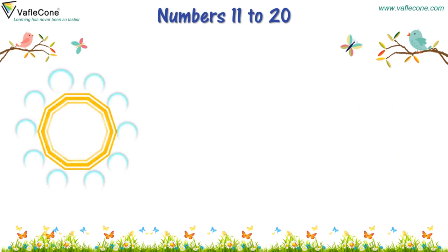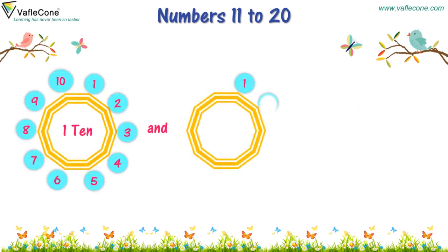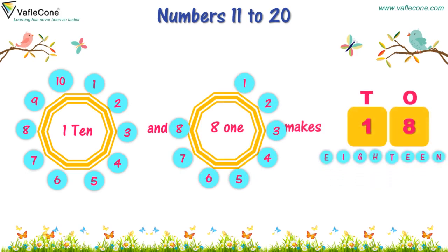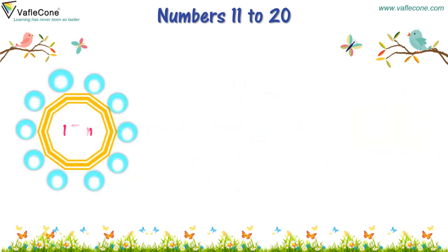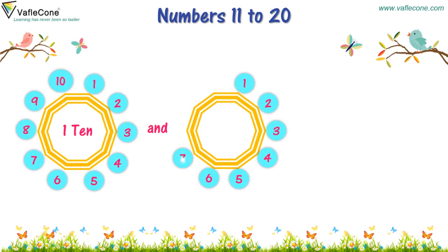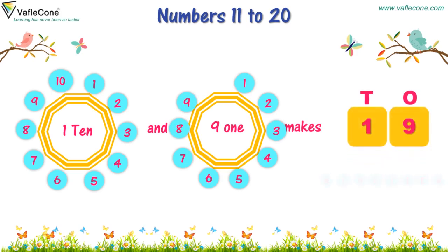1, 2, 3, 4, 5, 6, 7, 8 — 1 makes 18. 10 and 1, 2, 3, 4, 5, 6, 7, 8, 9 — 1 makes 19.